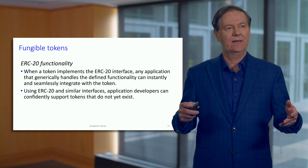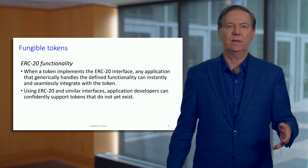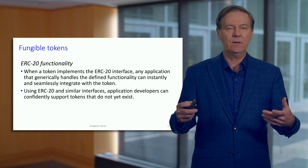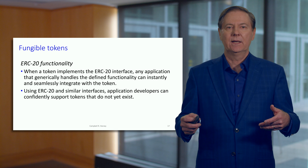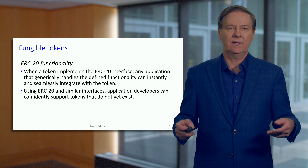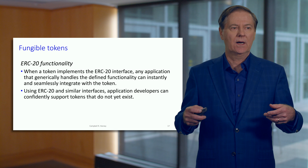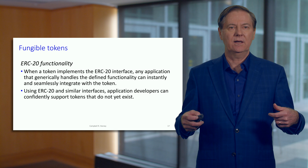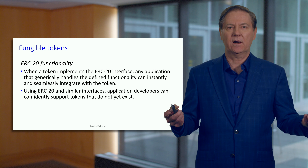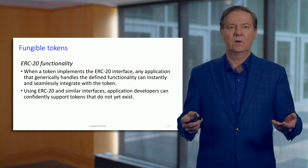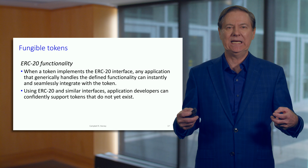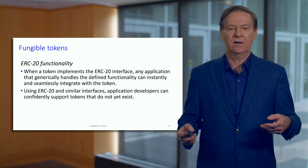ERC20 is a fungible token, which means that every single token is identical in value — just like every single $1 bill is identical in value, and 10 $1 bills is identical to a $10 bill. This is the basic idea of fungibility. The great thing with the ERC20 protocol is that tokens created with it can interact with each other very easily.